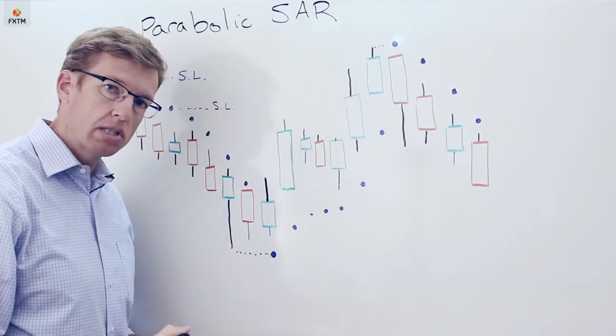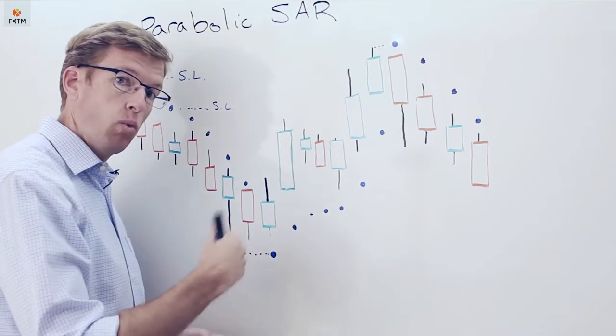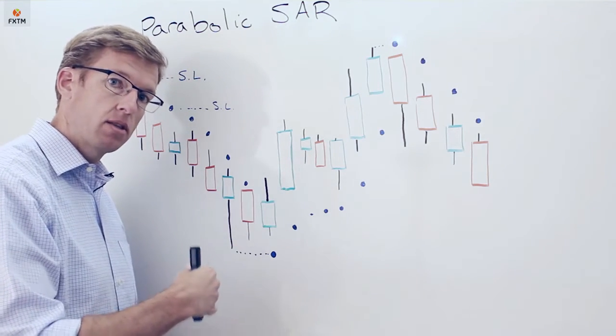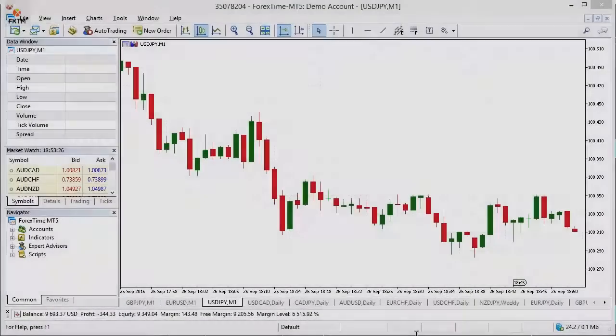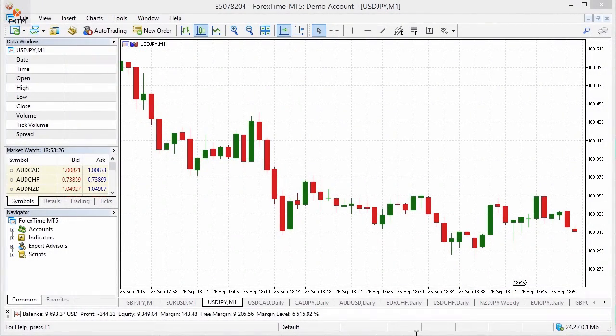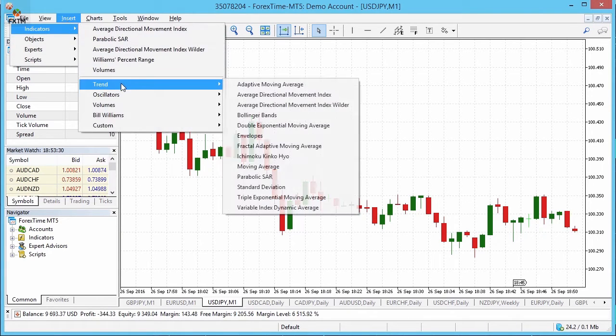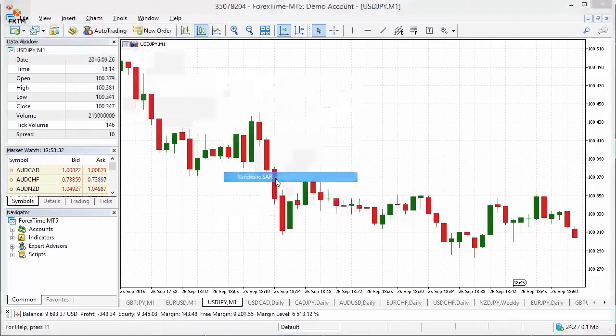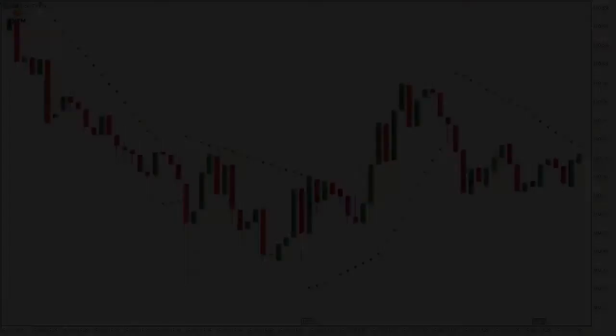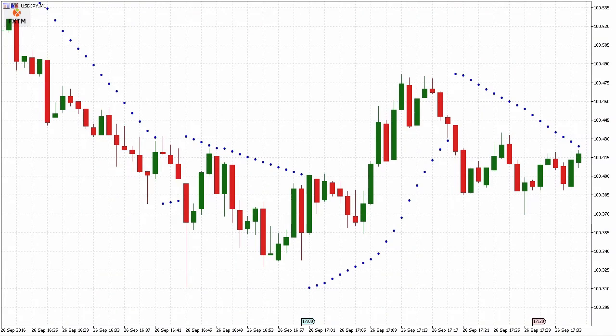Let's take a look at what this actually looks like on a price chart and what it looks like when it flips from underneath to up above. In order to add the parabolic SAR to your price chart, go to the insert menu, then indicators, then trend, and select parabolic SAR.